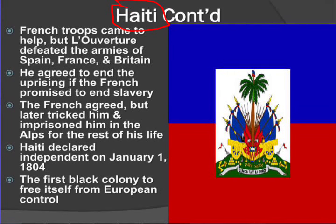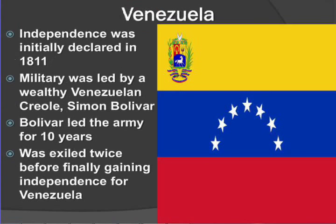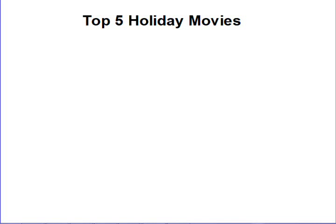Venezuela gets independence in 1811, led by an important figure — Simon Bolivar. You've got to know who he is. He's going to lead the army for 10 years; he gets exiled, but eventually the key thing is he gains independence for Venezuela.